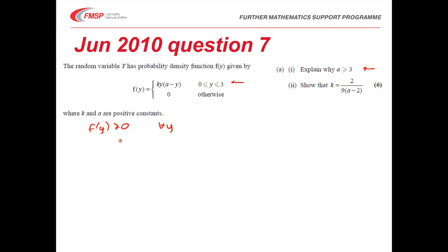If we analyze this, we've got three factors: k, y, and a minus y. I'm only dealing with the fact that y is between 0 and 3. Now k is always positive, so I don't need to worry about that. Y is always positive as long as I'm between 0 and 3, which is equally good. So really I only need to consider this function here, a minus y.